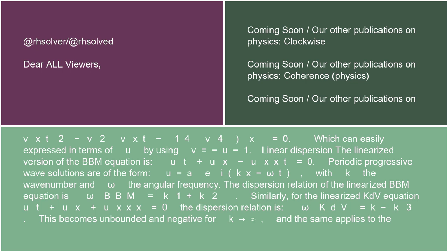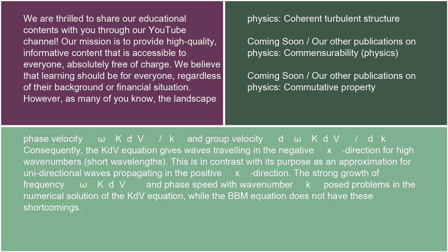This becomes unbounded and negative for k→∞, and the same applies to the phase velocity ω_KdV/k and group velocity dω_KdV/dk. Consequently, the KdV equation gives waves traveling in the negative x direction for high wavenumbers (short wavelengths).